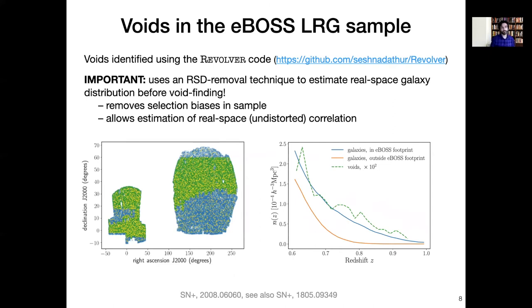Okay so when we're applying this to data we're using the eBOSS LRG sample as I mentioned before and that's combined with the high redshift tail of the earlier BOSS CMASS data, and we use the REVOLVER code in order to identify voids in this sample. Now a very important aspect of the REVOLVER code is that before performing the void finding it uses an RSD removal technique in order to go from the redshift space galaxy data to an estimate of the real space galaxy distribution and then performs void finding on that. This step has been shown to be very important in order to remove selection biases in our sample that will completely mess up the measurement. As an important side effect it also allows us to estimate the real space undistorted void galaxy correlation which as you will see later is quite an important thing to do.